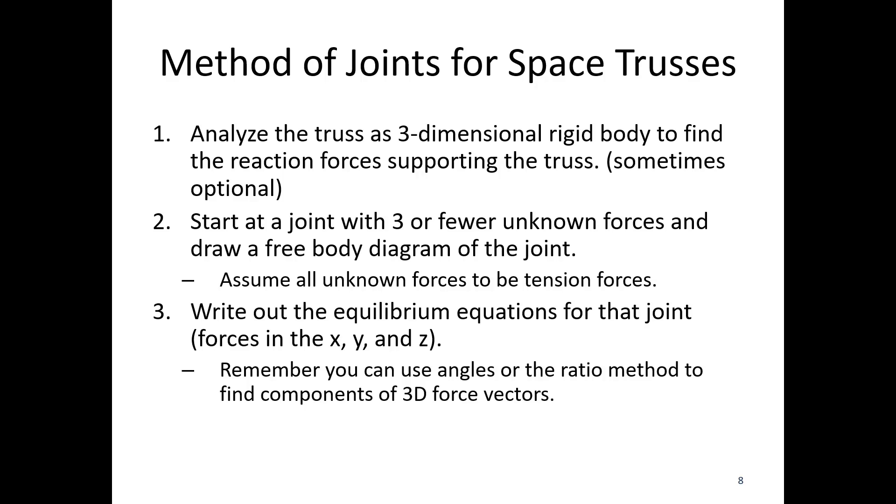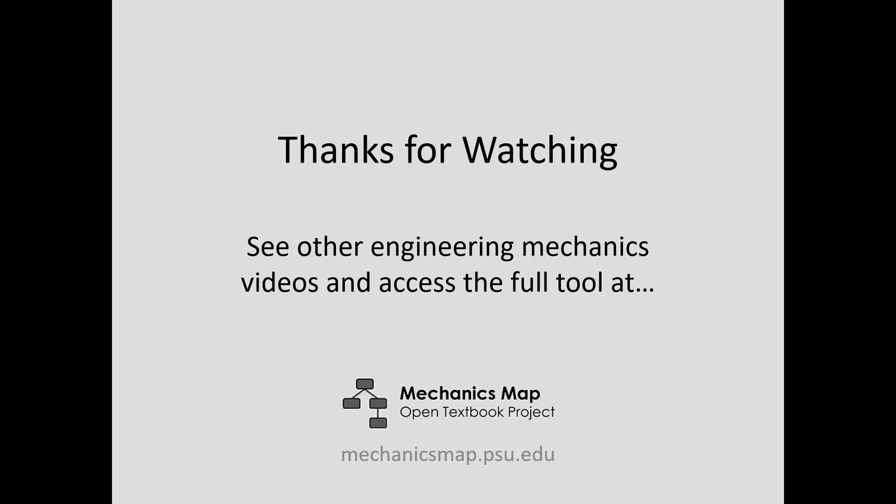And remember to use angles or the ratio method. So we've got two different methods for breaking down vectors in 3D into our components for the x, y, and z force equations. And then just like before, we solve our equilibrium equations for the unknowns. Starting at a joint with three or fewer unknowns and working out from there, we can work our way across the truss, starting at one end and working our way joint by joint to the other end in this whole process. So that's all we have for today's video lecture. Thank you for watching, and I hope to see you again.